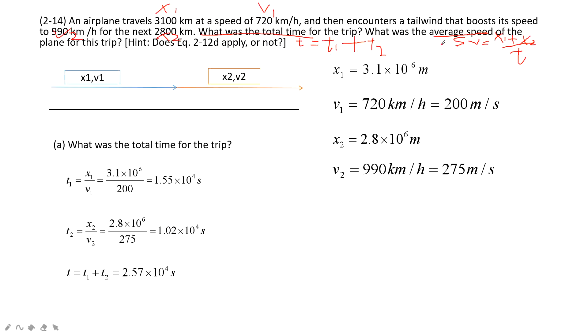The second one, we need to find the average speed. So average speed is x1 plus x2 divided by total time t. Therefore, we can solve the problem. This is 230 meter per second.